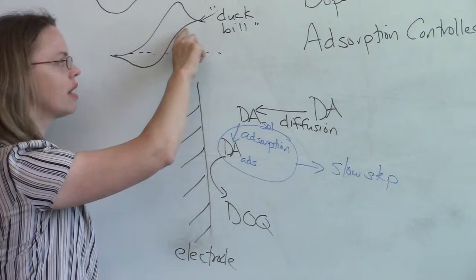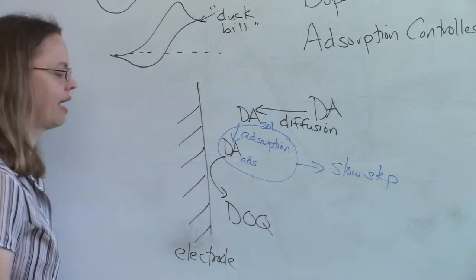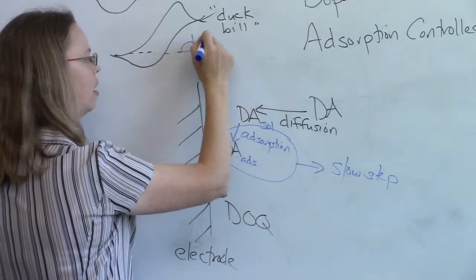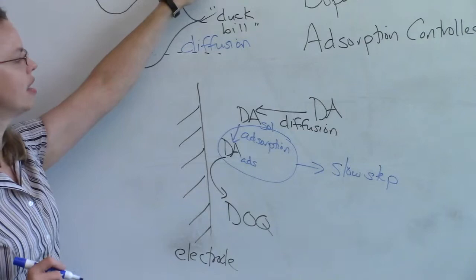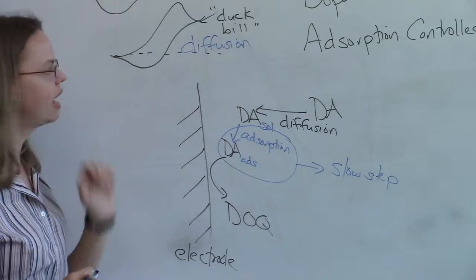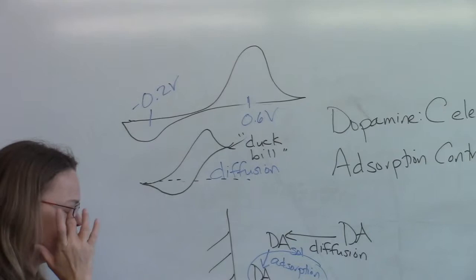And we're still doing oxidation, as I said, even when we come back down because there's still stuff that's diffusing in and we're at a potential that can happen. So this is a characteristic shape of diffusion control. But we don't have the same shape for our FSCV voltammogram. And so that's because it's adsorption control.